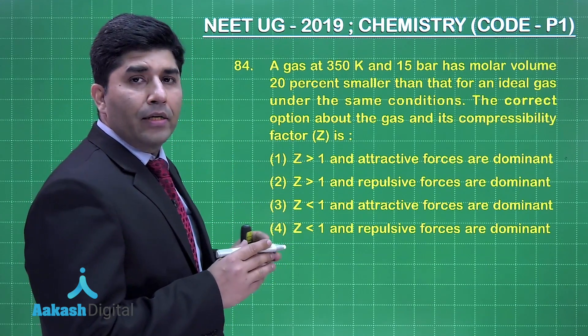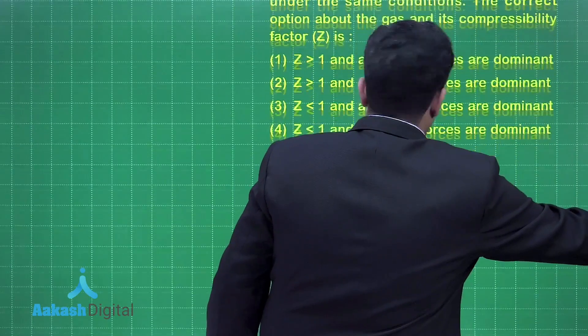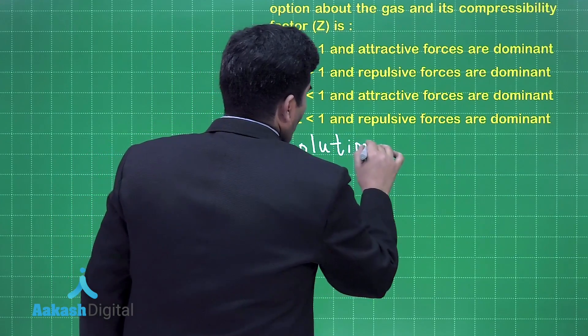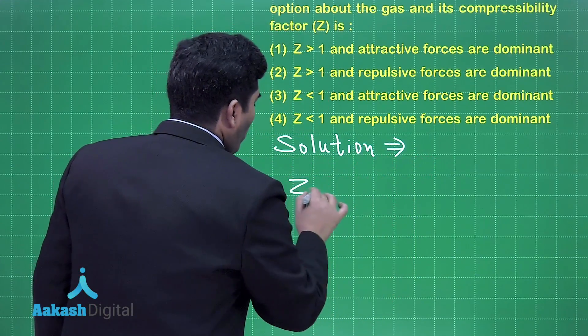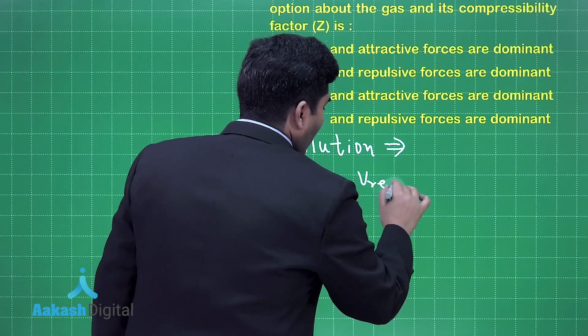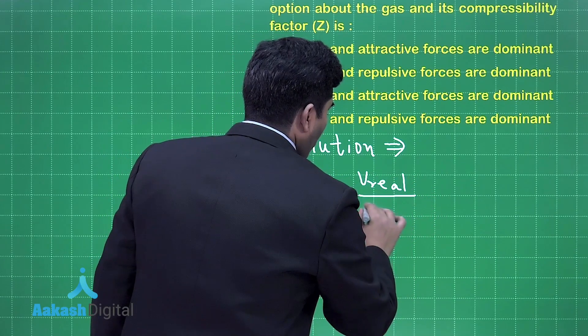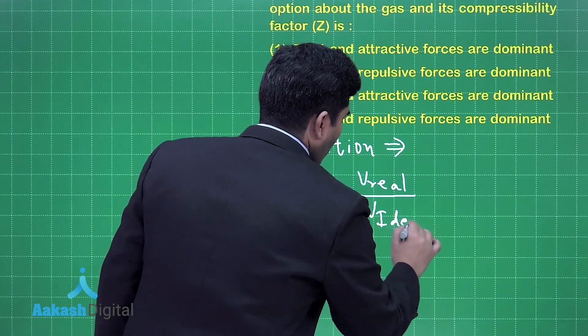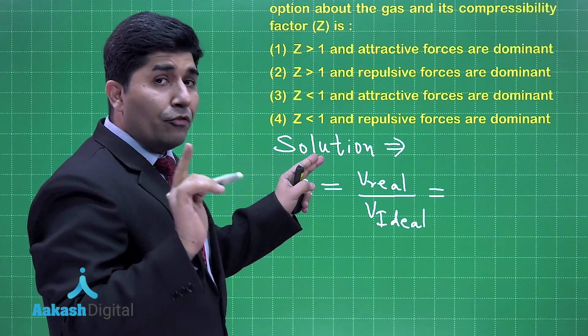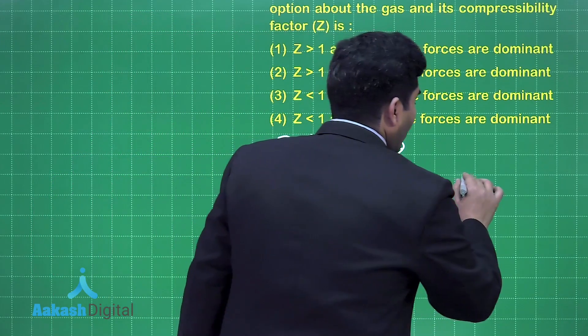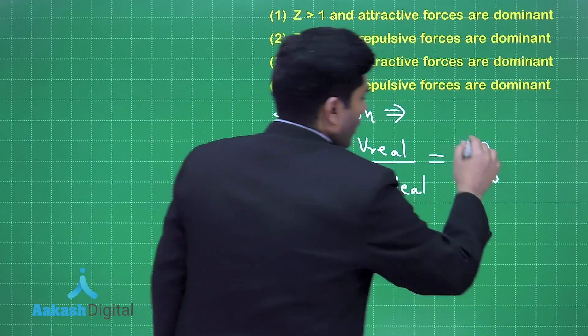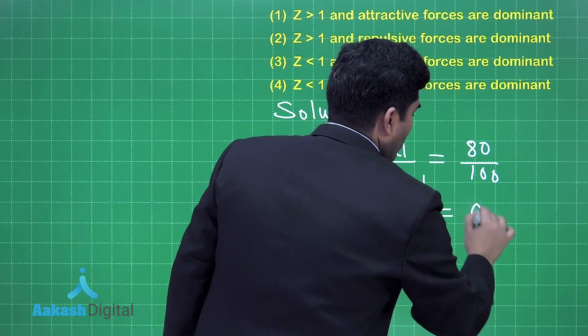Let's move to the solution. We all know Z = V_real/V_ideal. Now V_real is 20 percent less than that of V_ideal, so if it is 100, then that will be 80.